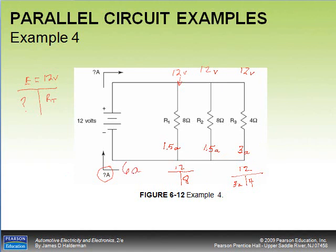Total current is 6 amps. With total voltage known and total amperage known, total resistance = 12 divided by 6 = 2 ohms. That's less than the smallest resistive branch of 4 ohms, so the answer checks out.